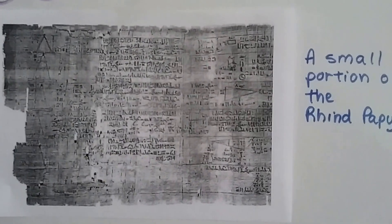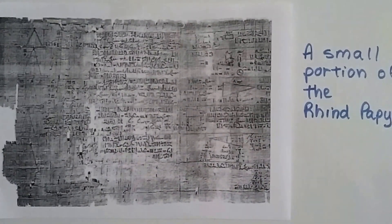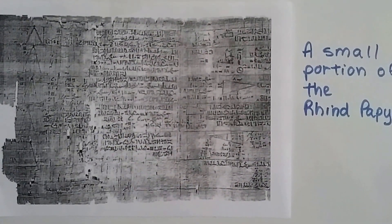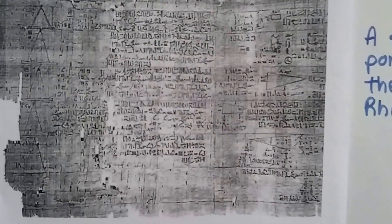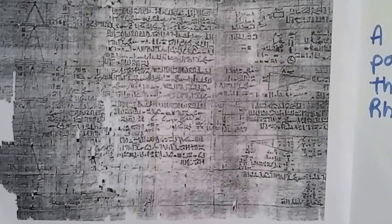This is a small portion of the Rhind Papyrus. It's also called the Rhind Mathematical Papyrus. If you look really carefully, you can see geometry in there. You see the angles, the triangles?